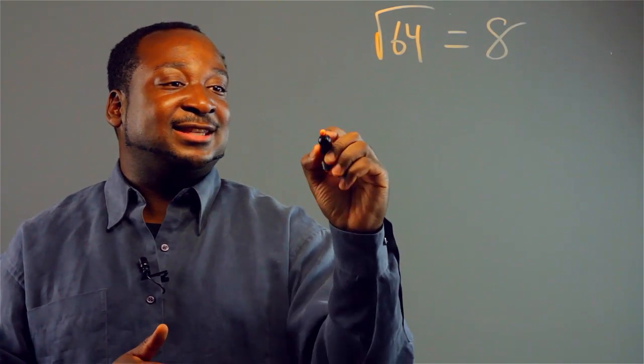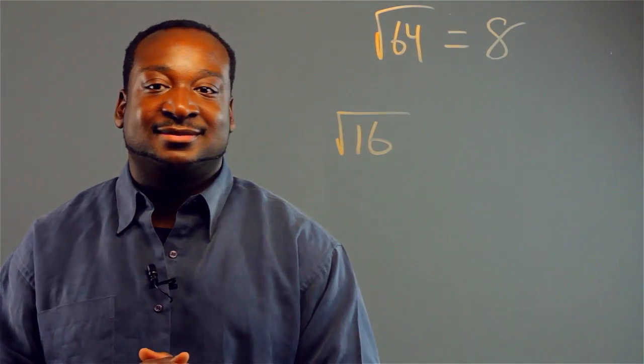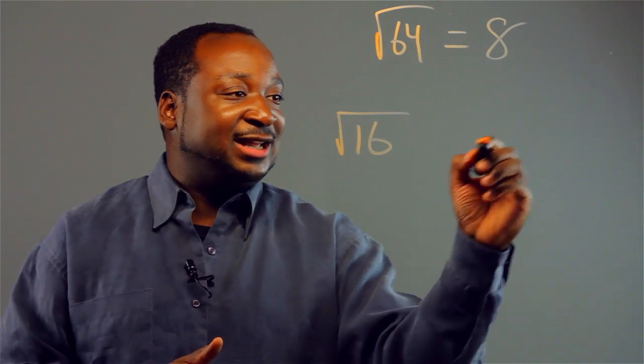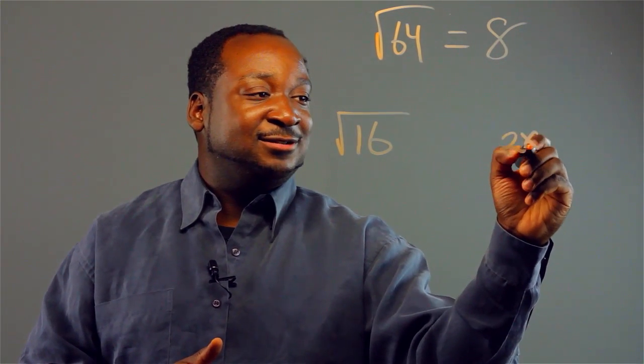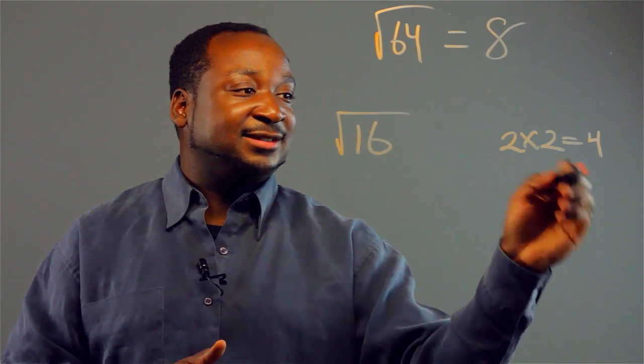Now, let's say we're trying to find the square root of 16. Okay, we could try a number like 2. Let's see. 2 times 2 is equivalent to 4. So, that's too low.